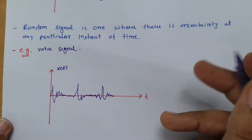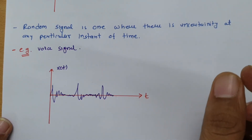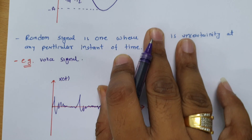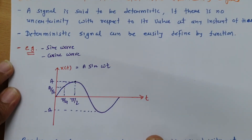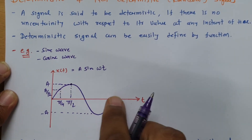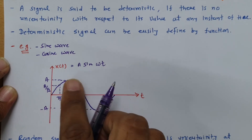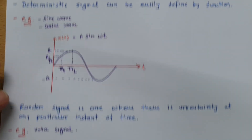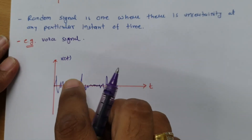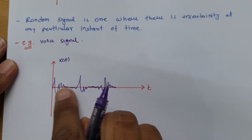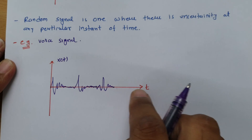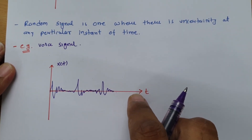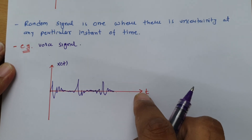In a deterministic signal we can define the signal by a function and there is no uncertainty in its value at any instant. While in the case of a random signal, there is uncertainty of its amplitude at any instant — that is what a non-deterministic or random signal is.